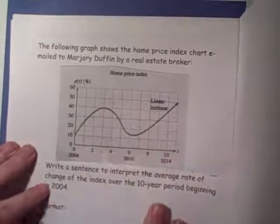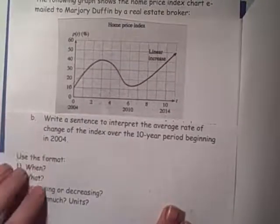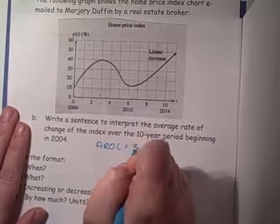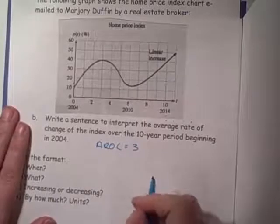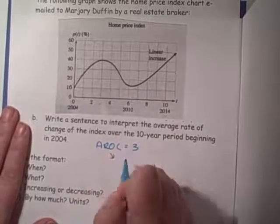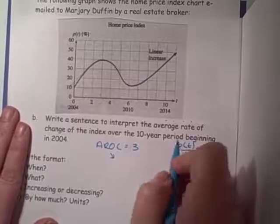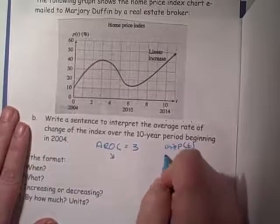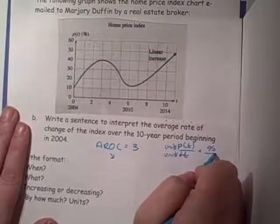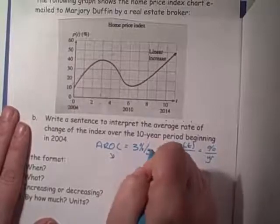In part B, they want us to interpret that average rate of change. We found that the average rate of change was equal to 3. Let's look at our units. The units for the average rate of change are the units of P of T over the units of T. The units of P of T is percent, and the units of T is years. So this is percent per year.